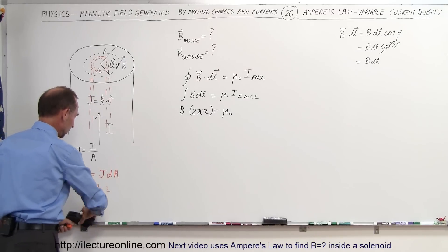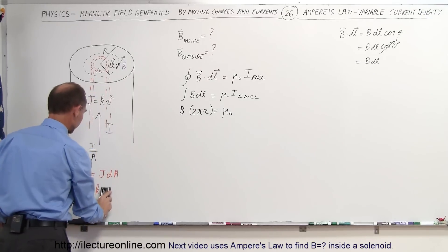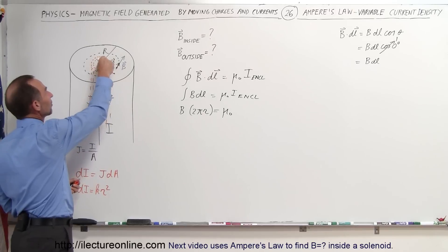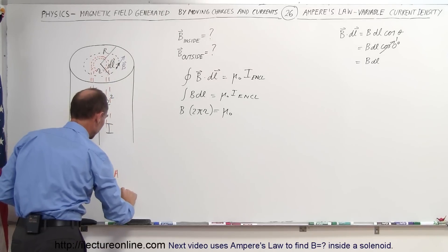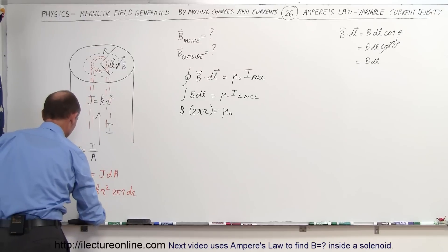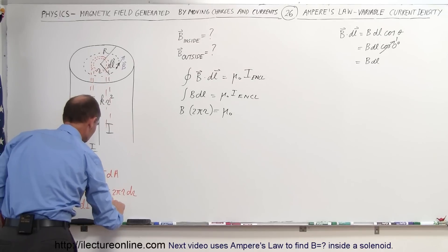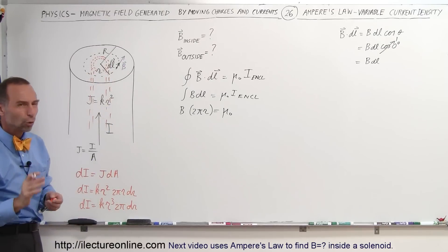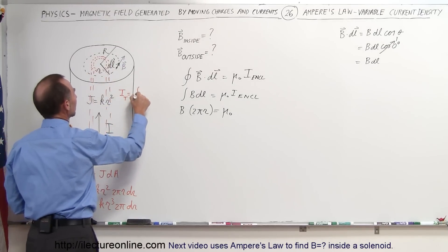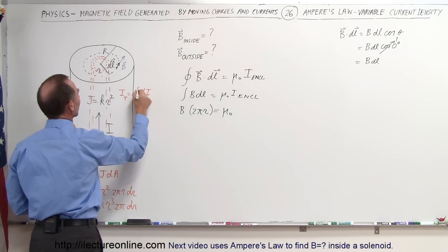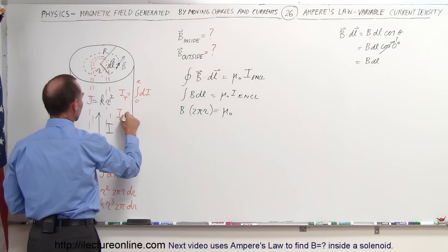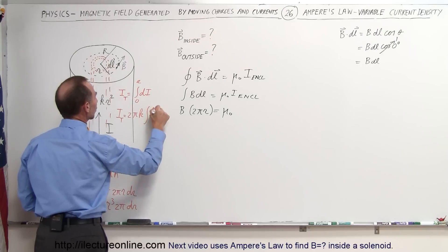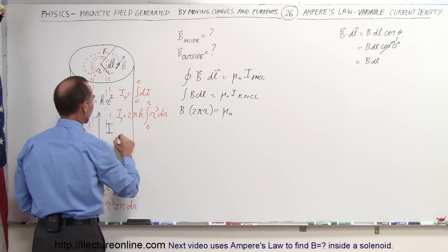J is equal to kr², so dI equals kr² times dA. The area element dA is the circumference times the thickness: 2πr·dr. So dI simplifies to kr³ times 2π times dr. To find the total current inside, I_total equals the integral of all the dI's from zero to r, which is 2πk times the integral of r³ dr from zero to r.